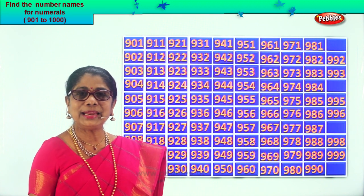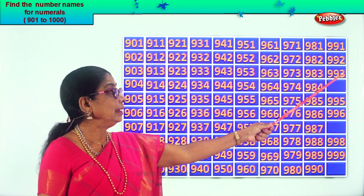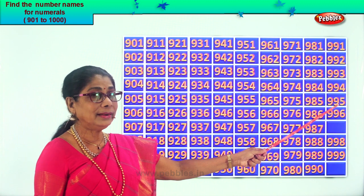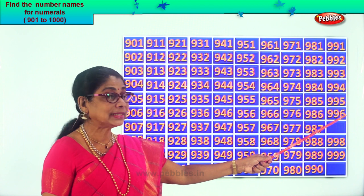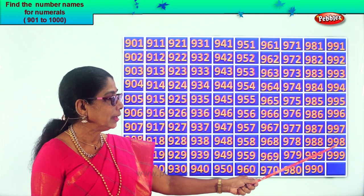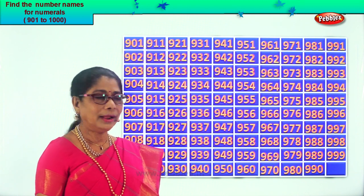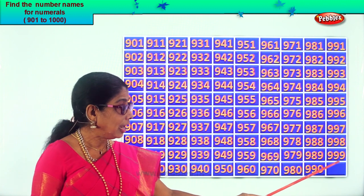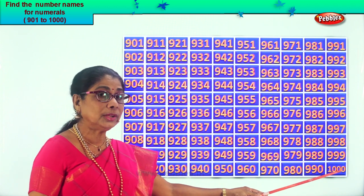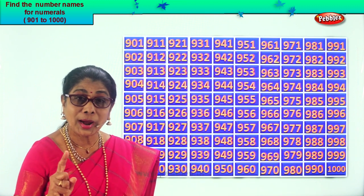After 90, what's the next number? 91. So the next missing number is 991, 992, 993. After 93, 94: 994, 995, 996. After 96 comes 97. So we get the next missing number: 997, 998, 999. After 99, 100. After 999, what number will we get? The four-digit number: 1, 0, 0, 0. What is that? 1,000. It's a four-digit number. So after 999, what is the number that comes next? 1,000.